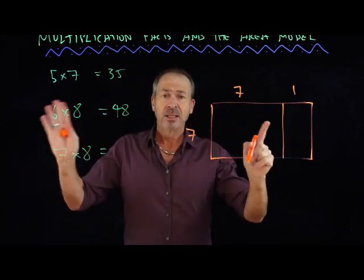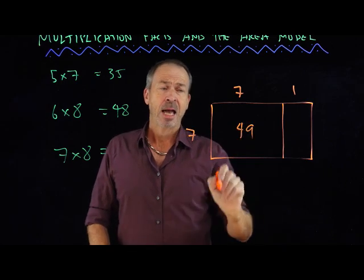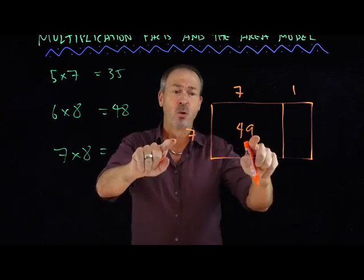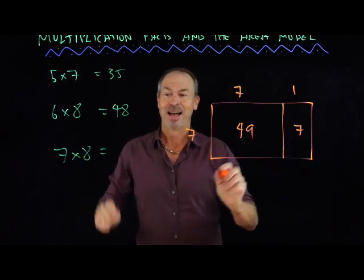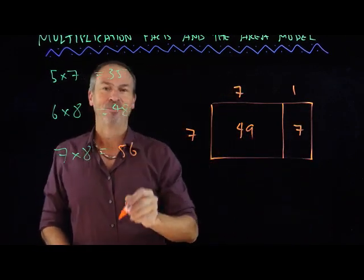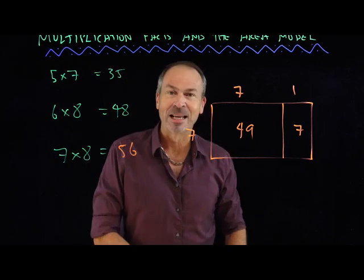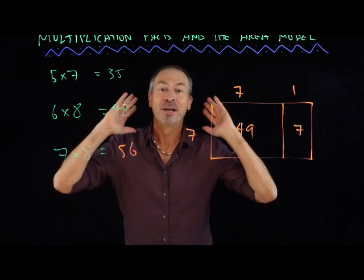So you could say, okay, I know 7 times 7 is 49. And now I can see that 7 times 8 is going to be 49 plus an extra, what's 7 times 1? 7. Ah, the answer must be 56. If he could demonstrate some sort of argument like that, what a gift to the world.